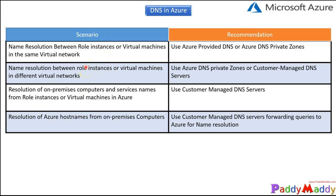For a single virtual network that's the approach. But what if you have two or more different virtual networks and you want resources to communicate with each other from VNet one to VNet two? In that case, the best recommended method is to use Azure DNS private zones, or a customer-managed DNS service where you spin up your own DNS server — fully managed by you — can also be used.